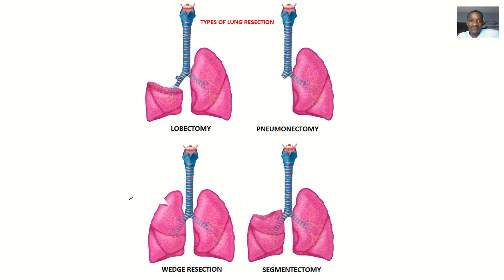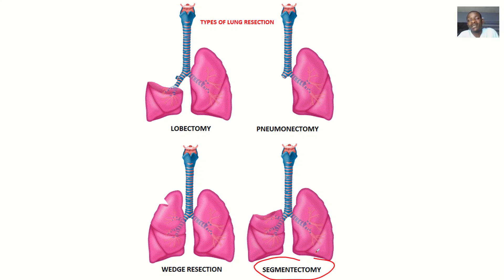Looking at the four different types of surgeries that could be done for the lungs, we're actually talking about what this segmentectomy is. If you know the anatomy of the lungs — the lungs have lobes, the lungs have segments — segmentectomy is more like just removing the segments that are affected. Lobectomy is more like removing the lobe that is affected.